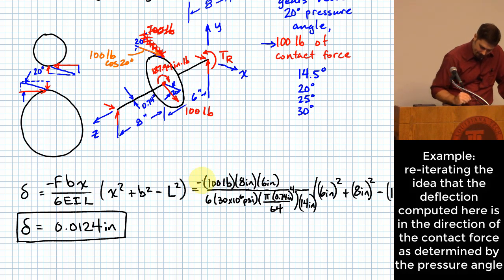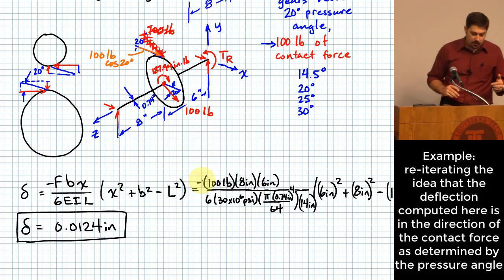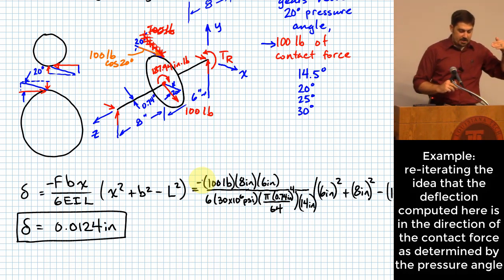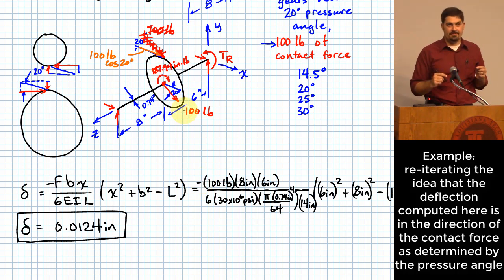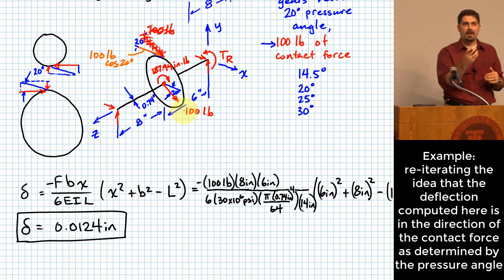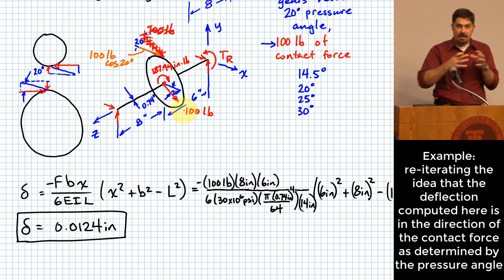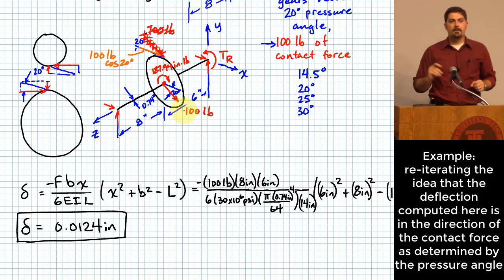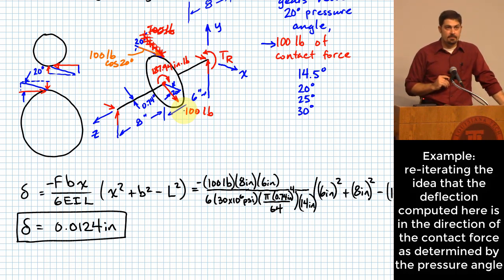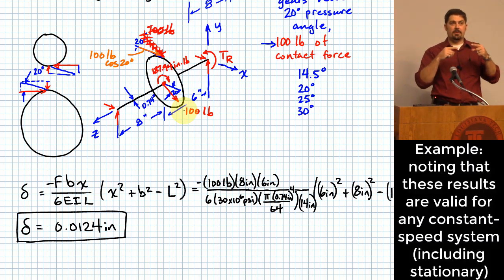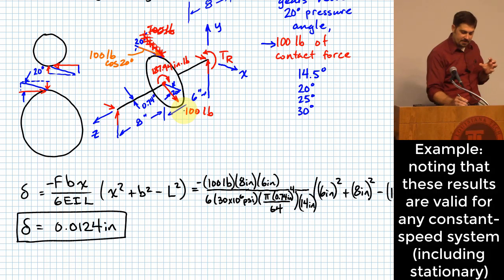Why don't we split the 100-pound force into components? Because 100 pounds is the force that acts in the direction we are evaluating the deflection in - the pressure angle direction. We get to take the entire amount of force, and that entire force leads to that deflection in that direction. If the pressure angle were zero, all the deflection would be in the X direction.